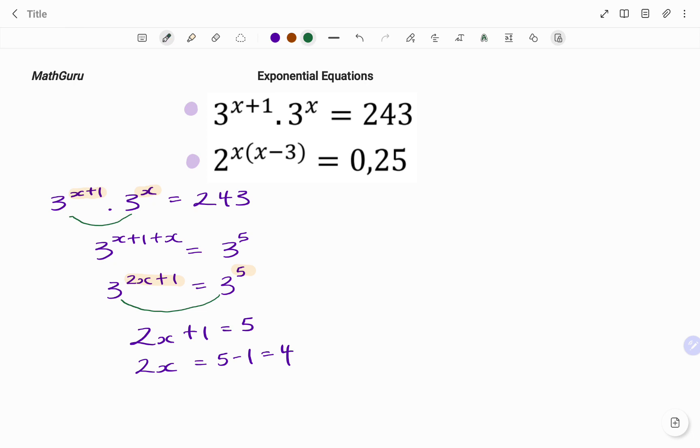And to find x, I'm going to divide both sides by 2, 2 in 2, 1. So therefore, the value of x equals 4 divided by 2, and that's 2. So let's look at the next example.